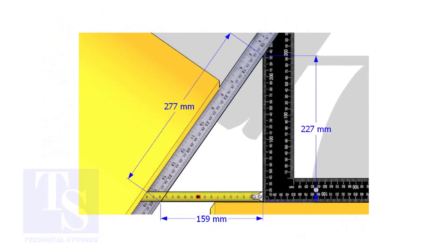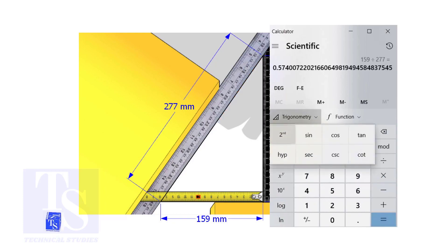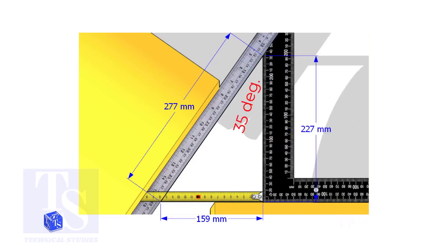Assume that these are the dimensions. Let us calculate the included angle. If you apply the sine rule, the angle will be 159 divided by 277, shift sine. So the answer is 35 degrees.